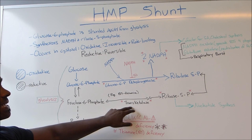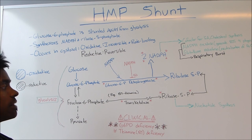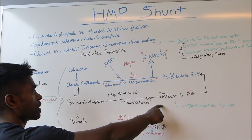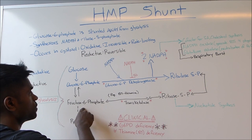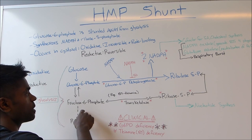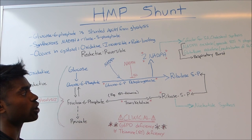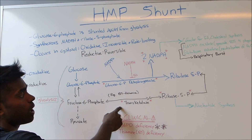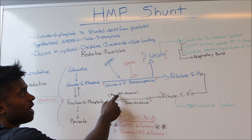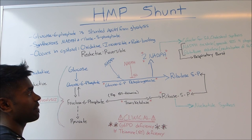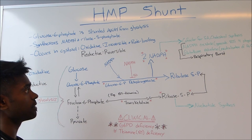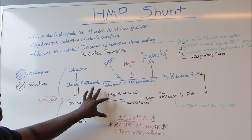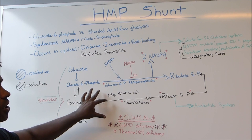The next thing to pay attention to is the enzyme transketolase, which is also an important enzyme. It converts ribose-5-phosphate to fructose-6-phosphate by moving around a carbon group, and this enzyme requires vitamin B1, also known as thiamine. These two enzymes are important because deficiencies in them are what cause pathological outcomes.